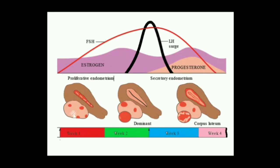As the follicle grows, it produces estrogen, and this estrogen induces endometrial regeneration. The dominant follicle, or Graafian follicle, develops containing the egg. At the stage when we call it a dominant follicle, its size is between 17 and 27 millimeters.